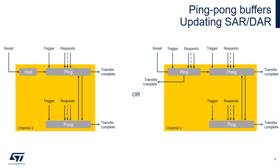The management of a ping-pong buffer pair can be preferred versus a unique circular buffer. The figure on the left describes the implementation without any first data transfer via the register file, using only a link transfer for loading the LLI ping data structure. When the first request and possibly trigger is received, the LLI related to the ping buffer is executed. Once the buffer is full, the transfer complete interrupt informs the software that the ping buffer contains data ready to be processed. The link transfer for loading the LLI related to the pong buffer also occurs when the ping buffer is full. The transfer complete interrupt then informs the software that the pong buffer contains data ready to be processed, and the link to the LLI related to the ping buffer occurs when the pong buffer is full.